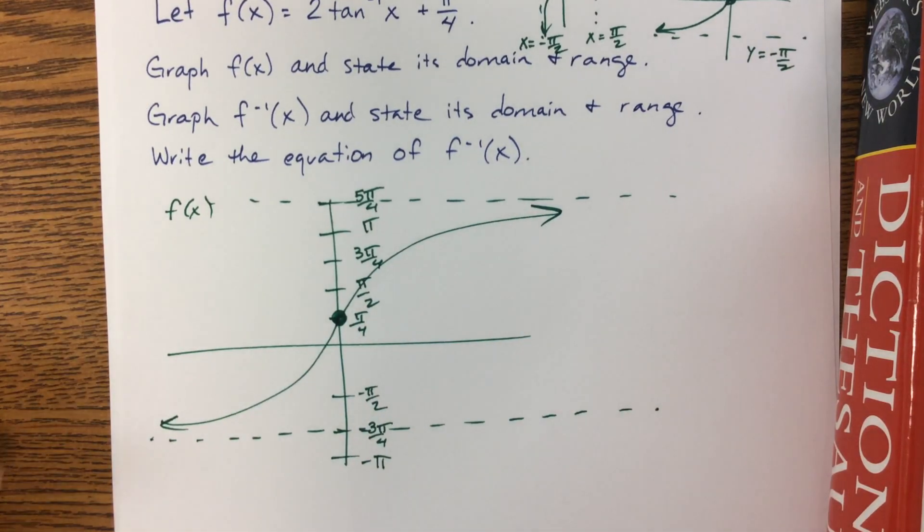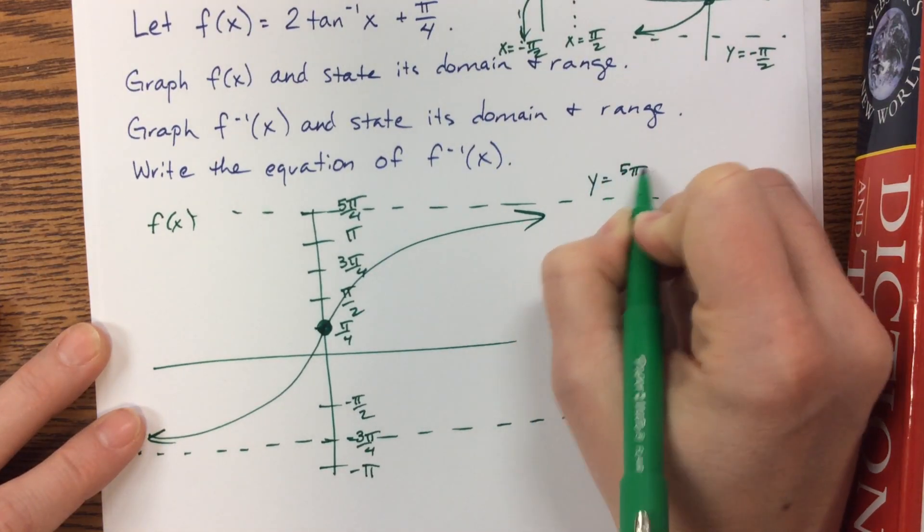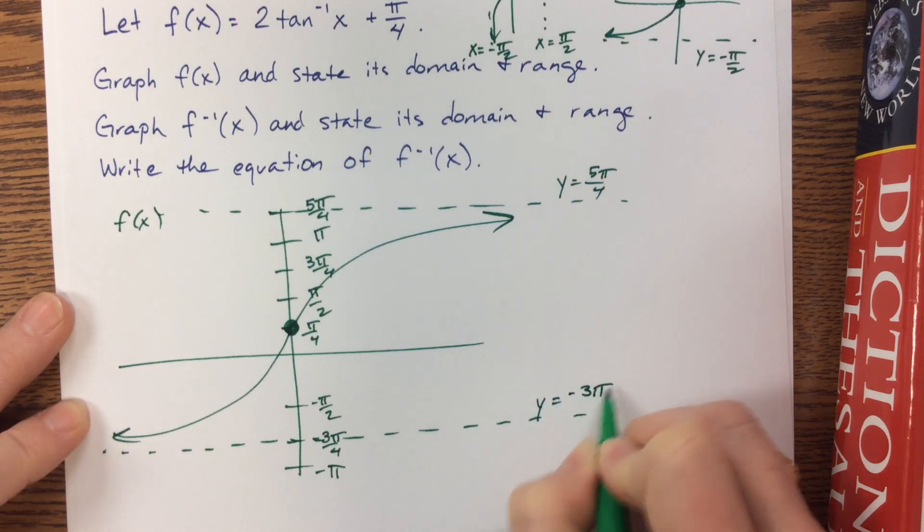Okay, that's the graph of f of x. This was y equals 5π/4, and y equals negative 3π/4.